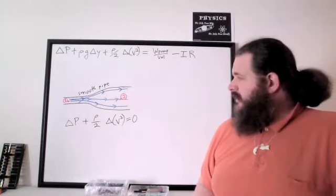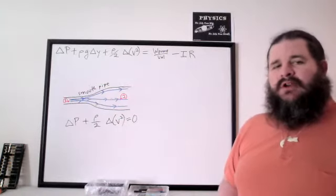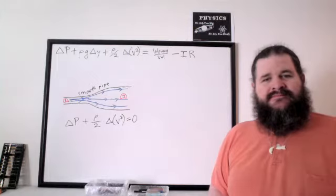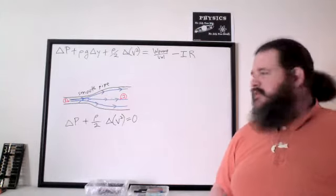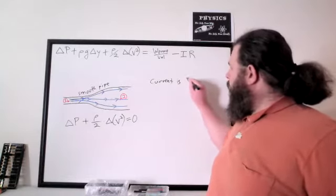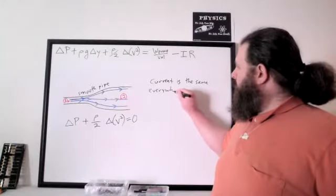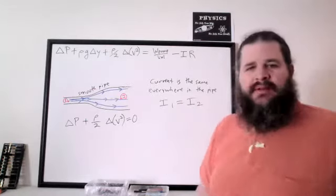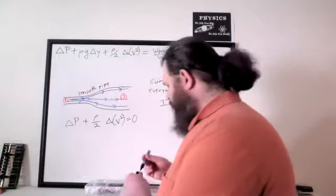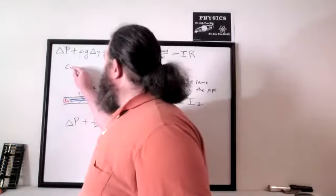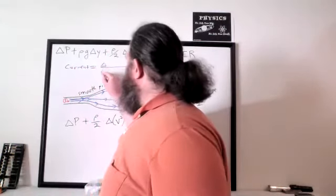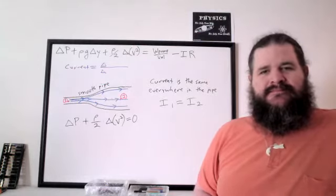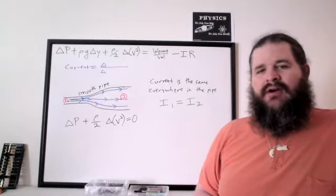The reason the speed has to change involves what we call the continuity principle. What do we know is not changing from point one to point two — what has to be the same at any two points in the pipe? The flow rate, or in other words, the current. Current one equals current two equals current anywhere else in the pipe. The reason for this has to do with how current is defined: current is a flow rate, a rate of change.